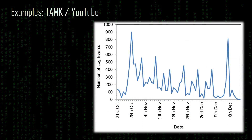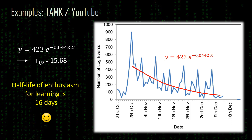Looking at the same picture but from a different view: if we remove the final exam spike and look at actual study time — being a physics teacher, I really needed to fit an exponentially declining curve to this data to find the equation. From that we can see that the half-life for enthusiasm is 16 days. Well, this is of course more of a joke, but it has truth in it. People tend to lose interest, and that's something all teachers need to do something about.